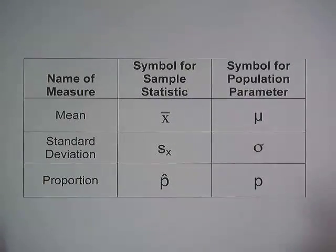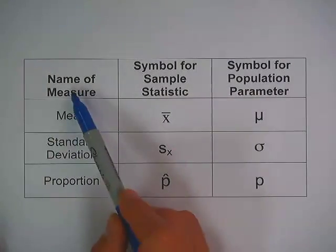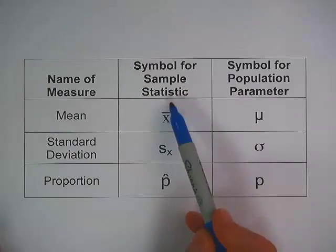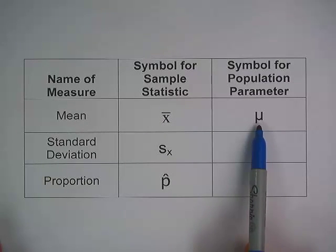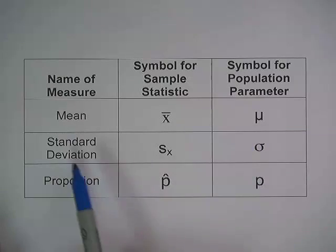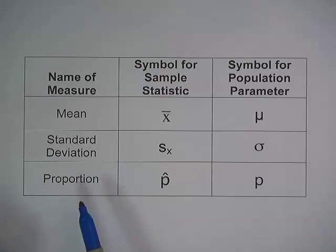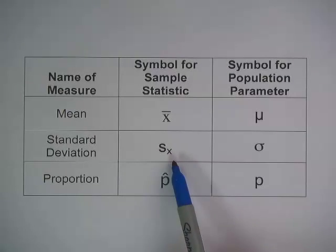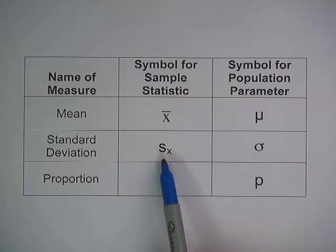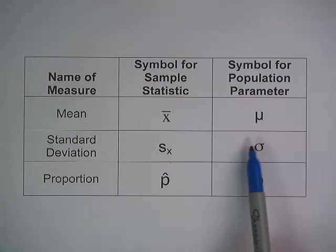Looking at this chart, I have the name of measure, the symbol for the sample statistic, and the symbol for the population parameter. We've already discussed the sample mean and the population mean. We can also look at standard deviation and proportion. The symbol for a sample standard deviation is s with a subscript x — sometimes just written as lowercase s. The corresponding population parameter, your population standard deviation, is the Greek letter sigma.